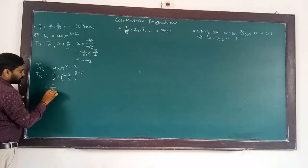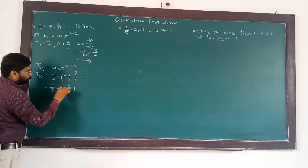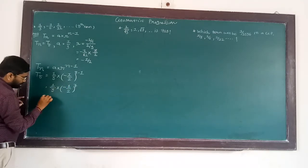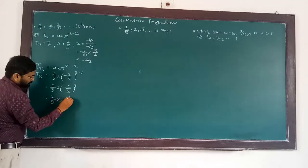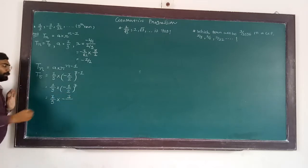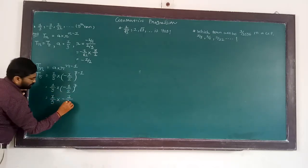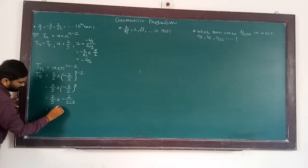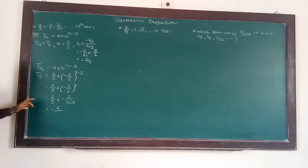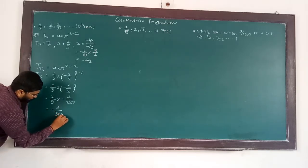So, T_A is equal to A, which is 1 upon 3, into R, which is minus 1 upon 2. The power is 8 minus 1, which is 7. So we have 1 upon 3 into minus 1 upon 2 to the power 7. Multiplied by 8, then multiplied by 3, giving minus 1 upon 4.